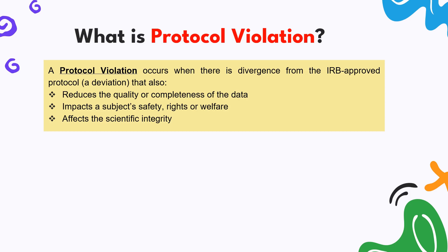Protocol deviation was a variance in the protocol where you do an activity slightly differently. But protocol violation is an entirely different category — it is a divergence from the approved protocol that can have a significant impact on the quality and completeness of clinical trial data, jeopardize subjects' rights, safety, and well-being, and significantly affect the scientific integrity of the entire clinical trial.